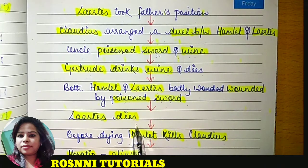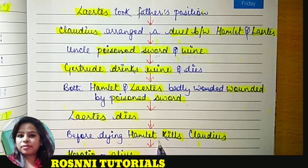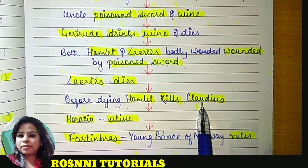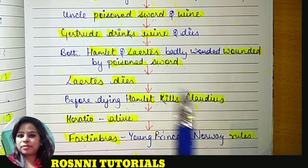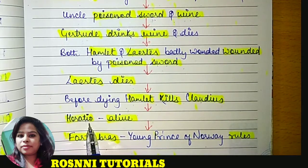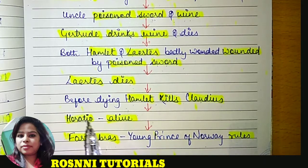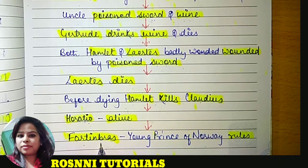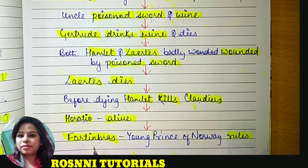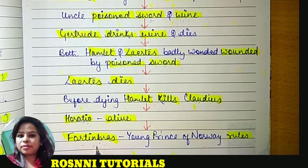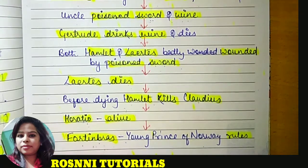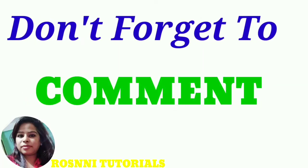Laertes dies because of excessive wounds, and then Hamlet also dies, but he dies after fulfilling his motive — the death of Claudius. Now everybody dies: king, queen, Hamlet, and his friends. Only his best friend Horatio remains alive, purposely kept alive by the writer to inform Fortinbras about the entire story and incident that happened — because it was King Hamlet who had killed Fortinbras's father in battle. So Fortinbras is going to rule Denmark from then onwards, as there is nobody left to rule. This was all about Hamlet.